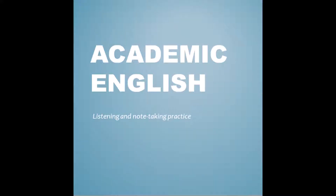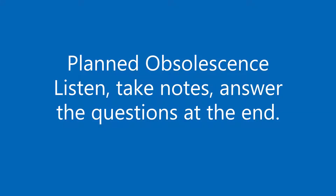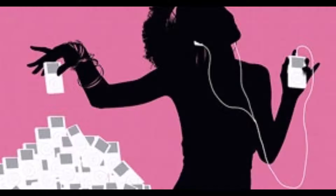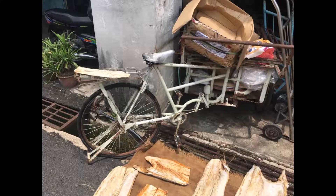Hello, this talk is about something called planned obsolescence. That might be a term you have not come across before, so firstly I'll define it with examples to illustrate the issue. Then I'll look briefly at the historical development of planned obsolescence. Then I'll explain why it has been described as an economic problem for the consumer. And finally I'll outline the arguments that suggest that it may in fact be more of an environmental problem and how that problem is slowly being dealt with.